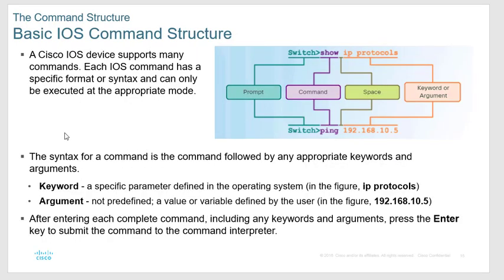Each Cisco command is based on a keyword and an argument. The command is like 'show', the keyword is what you want to show — like 'show run' means show me the running configuration — and the argument is a value like an IP address. So 'ping' followed by a number means the number is the argument. You'll never really need to know those exact definitions on the test — it's just textbook terminology.